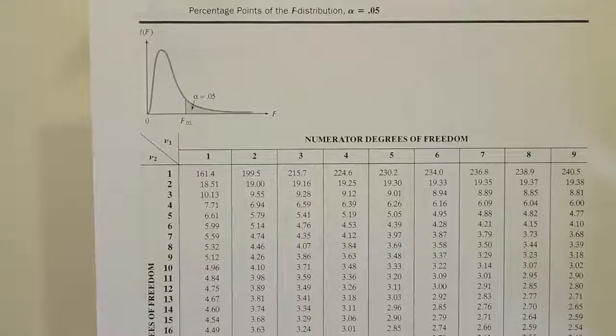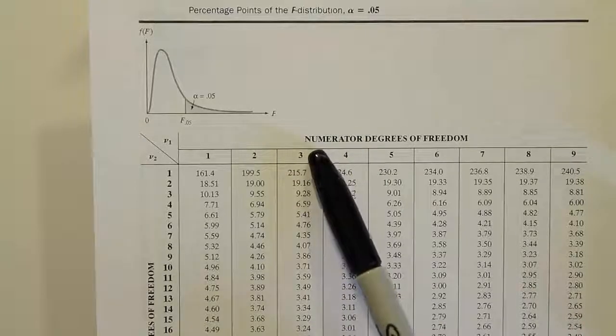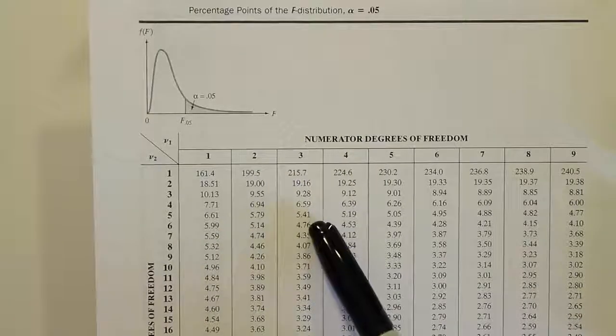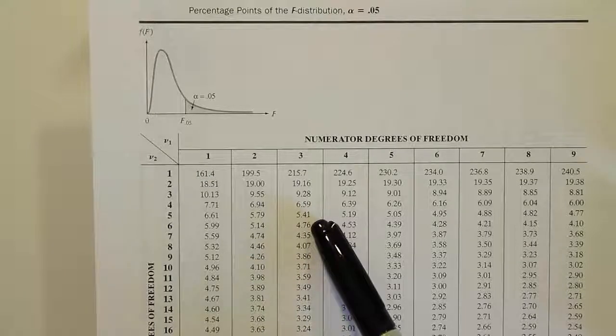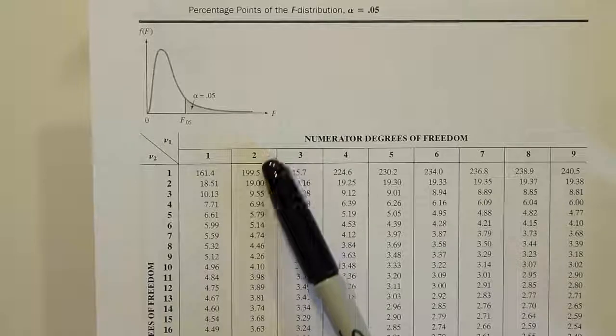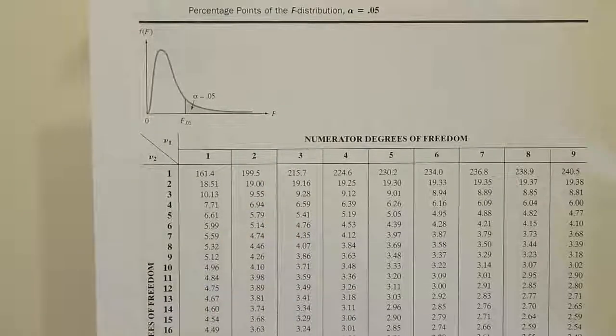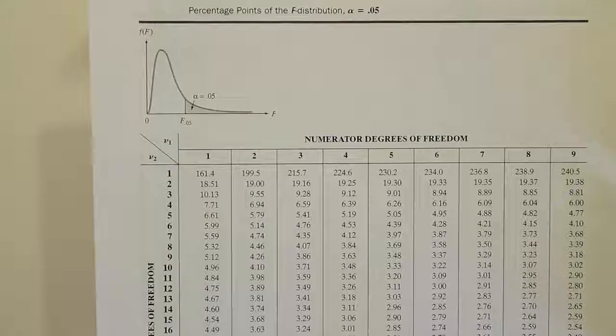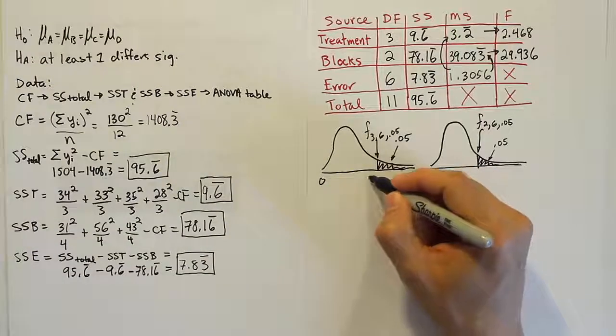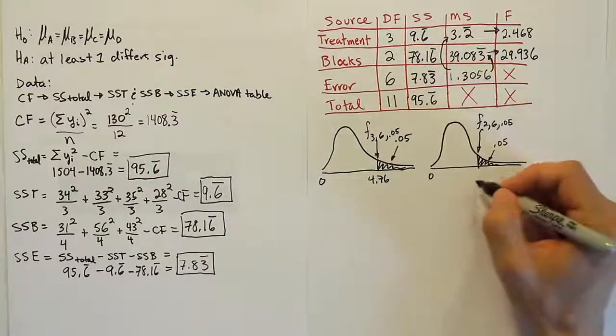So for the treatment critical value, we had numerator degrees of freedom 3, and denominator of 6, so we have 4.76 as our critical value, and then for the blocks, we had degrees of freedom 2 for the numerator, and denominator is 6, so we get 5.14. So we found our answers to be, for the first one, 4.76, and for the second one, we found 5.14.